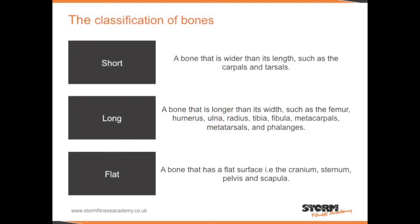Bones are classified depending on their shape. Short bones are bones that are wider than their length, such as carpals and tarsals. Long bones are bones that are longer than their width, such as the femur, humerus, ulna, radius, tibia, fibula, metacarpals, metatarsals, and phalanges. Flat bones are bones that have a flat surface, such as the bones that form the cranium, the sternum, the pelvis, and the scapula.